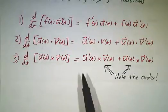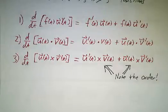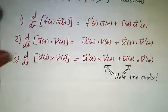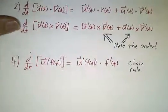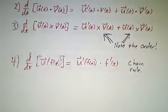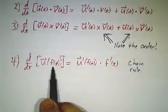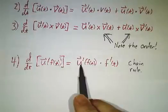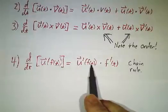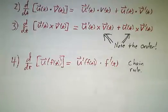Cross products depend on which order you put things in, so you have to be careful about that. Finally, the chain rule works exactly as it does for scalars: the derivative of u is u-prime times the derivative of what's inside.